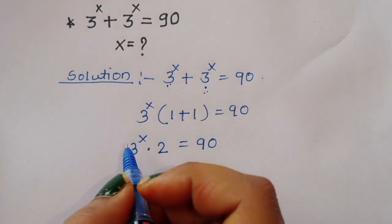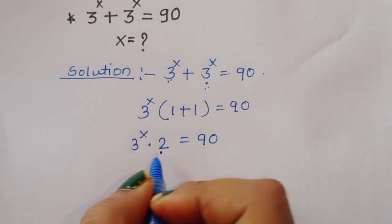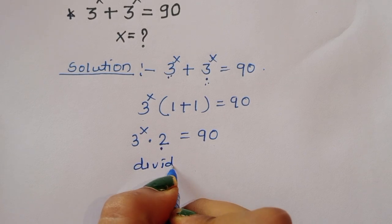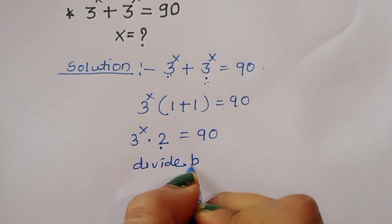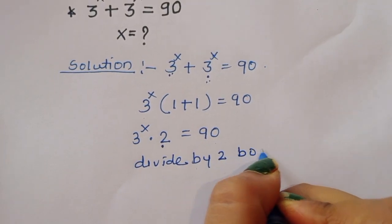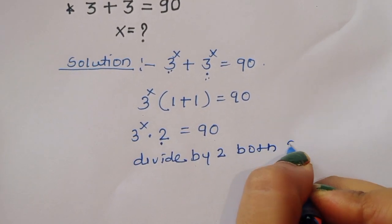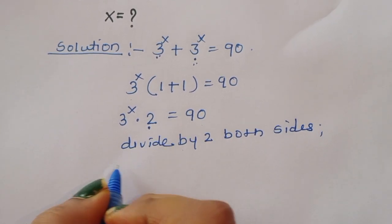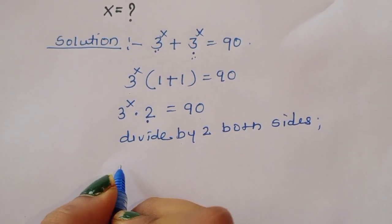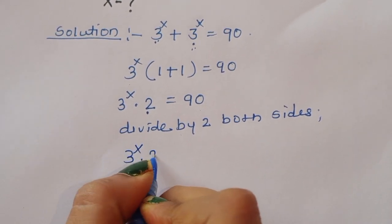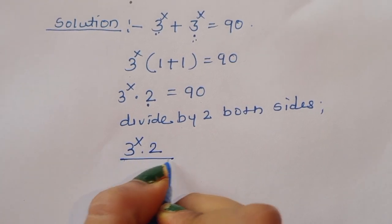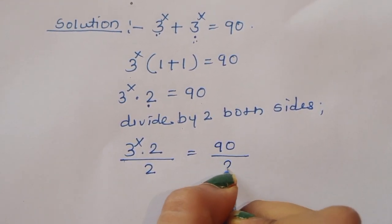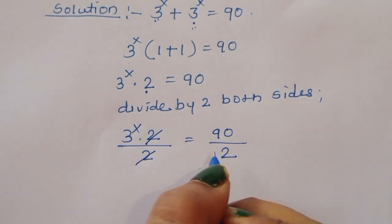Now 3 power x times (1 plus 1), which is 2, is equal to 90. We can divide by 2 on both sides.